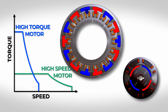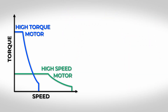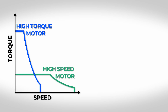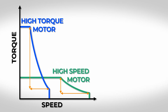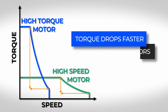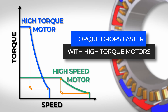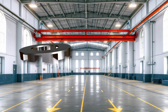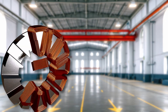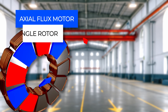High speed motors achieve their lower torques even at higher speeds. The torque often drops much faster with high torque motors. However, it depends heavily on the specific type of electric motor that is used. There are two types of electric motors primarily used for high torque applications.